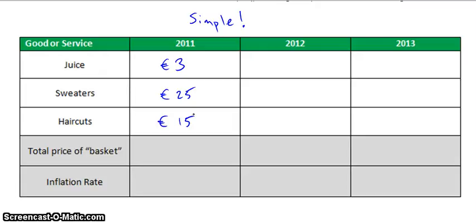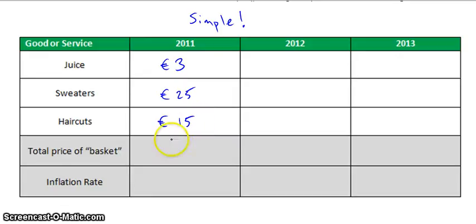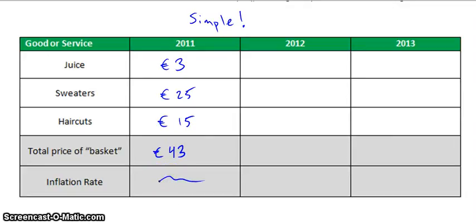Obviously that's a men's haircut, not a women's — I have no idea what that might be. Anyhow, we add those together and we get 43. So the total price of the basket of goods here is 43 euro. There's not going to be an inflation rate here because it's our base year, so we can't show any change because it's just one year.